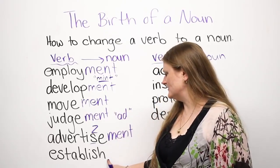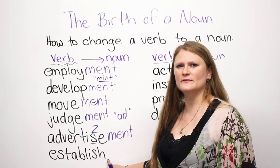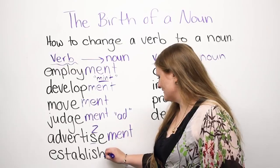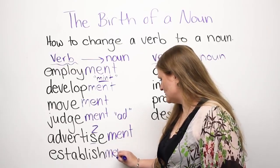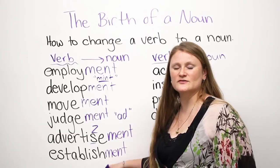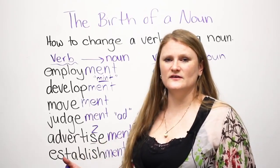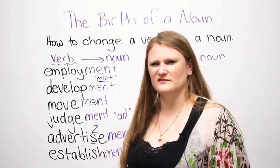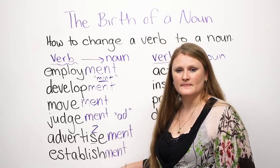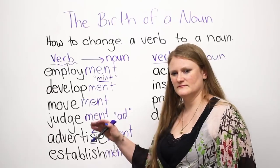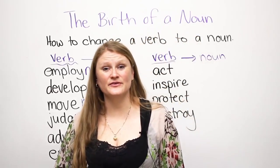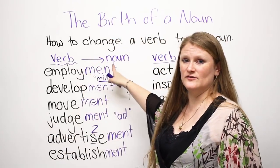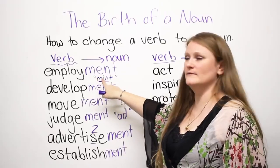Establish changes to establishment. Establishment means something that has been established. We usually use it in the form of government or politics, but it can also mean a place, like a restaurant. So trick number one: you take the verb and change it to a noun using '-ment' (pronounced like 'mint').